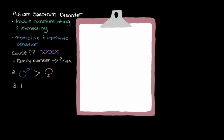We also know that the older the parents are when they have their child, the higher the chances that the child will have Autism Spectrum Disorder, and that kind of points to a genetic cause as well. So those are some of the clues we have, but we're still trying to figure out the whole puzzle when it comes to the cause of Autism Spectrum Disorder.